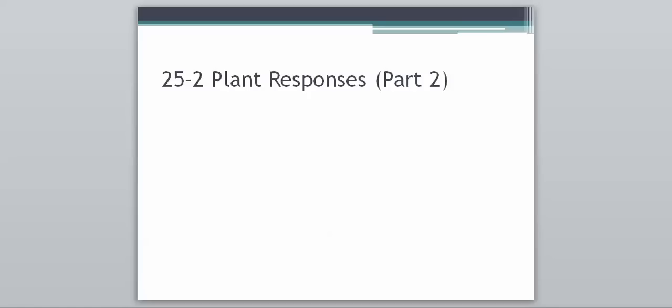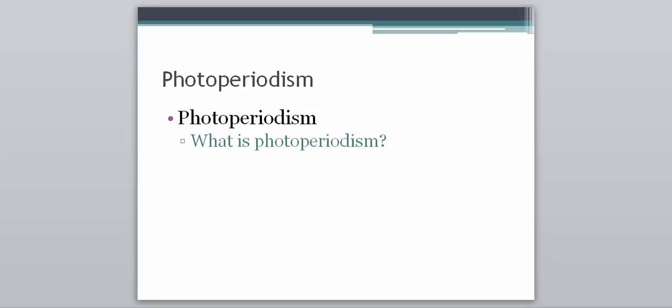Continuing on with section 2 in chapter 25, we're going to look at how plants respond to some more different things here. We're going to start right in with what is known as photoperiodism — another long, interesting word to add to our list from this chapter. So we're going to look at what photoperiodism is.